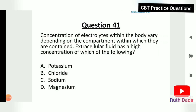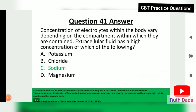Question 41: Extracellular fluid has a high concentration of which of the following? The answer is sodium. Extracellular fluid has an increased sodium content and is relatively low in potassium. Intracellular fluid is the reverse. The movement and distribution of fluids and solutes between compartments are controlled by the semi-permeable phospholipid cellular membranes that separate them.